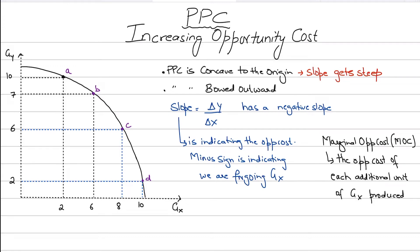Hi and welcome back. In this video we're going to be discussing increasing opportunity cost. An increasing opportunity cost PPC is basically concave to the origin. Concave to the origin means that as you go down the curve, your slope will basically get steeper.